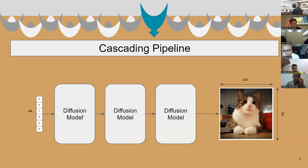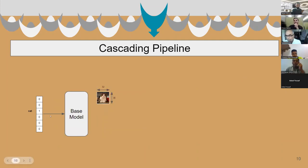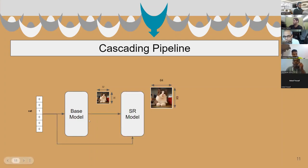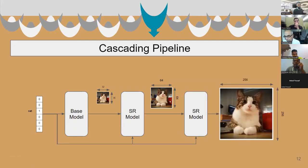The general idea is the first model takes the class as input, and then the second model takes the output of the first model as input, and so on, finally producing a high-resolution image. The authors first use a base model to generate a 32x32 low-resolution image from the class condition, then subsequently generate a 64x64 image using a super-resolution model, and finally generate a high-resolution 128x128 or 256x256 using a second super-resolution block.